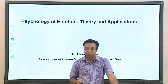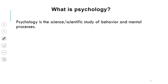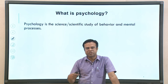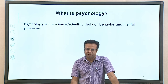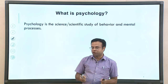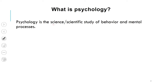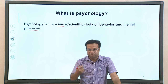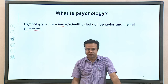Very briefly, I will define what psychology is all about. One of the basic definitions of psychology is that it is the scientific study of behavior and mental processes. If you look at this definition, there are a few things we need to understand: it is a science or scientific study, another term is behavior, and another is mental processes. The first thing is that psychology is a science — but what is the meaning of science or scientific study?